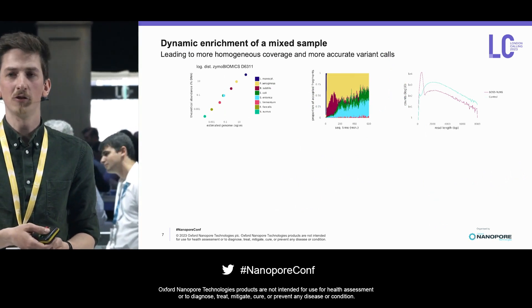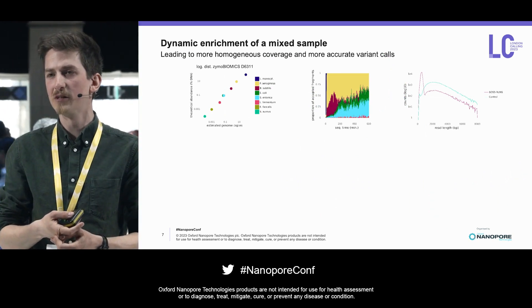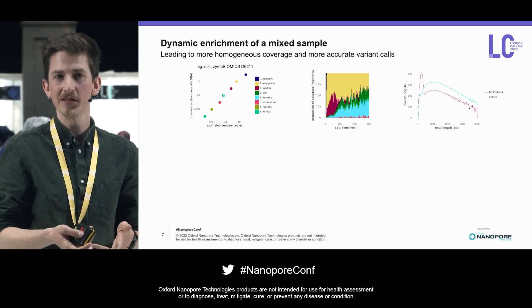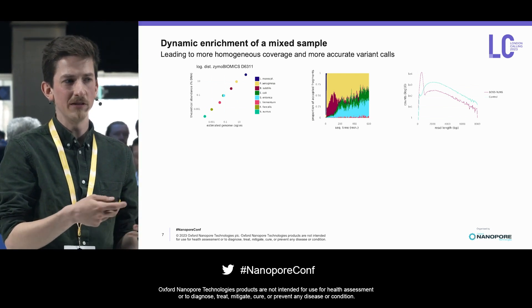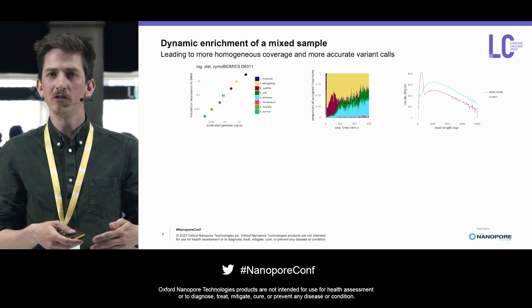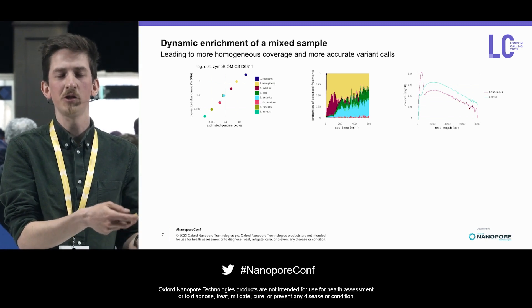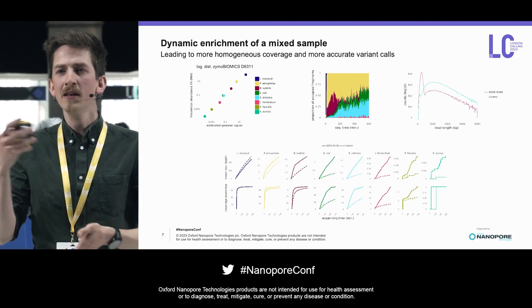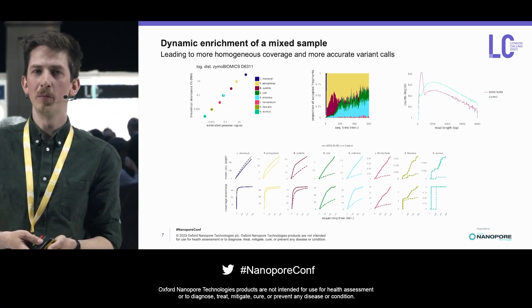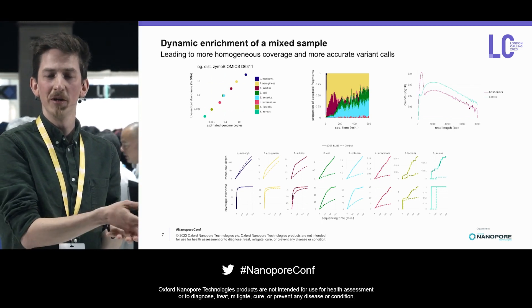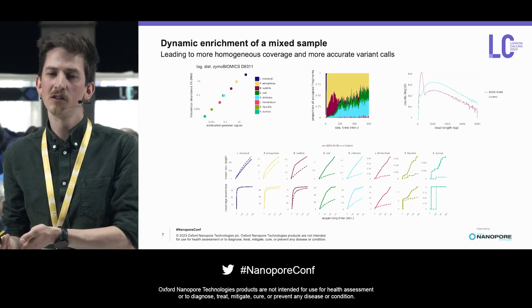We applied this technology to a mixture of microbial species that are logarithmically distributed in their abundance. What we observed is that the proportion of fragments we sequence from the different species changes over time according to our expectations from these abundances — we start progressively rejecting reads from the more abundant species and focus instead on the less abundant ones. We quantify this by measuring the mean coverage across the genome, where we trade off coverage from more abundant species to get more data from the less abundant ones, and also by the coverage evenness — how homogeneously coverage is distributed across these genomes.